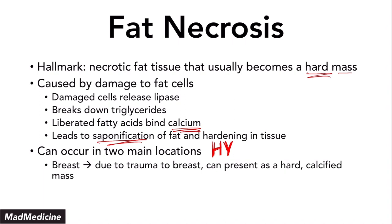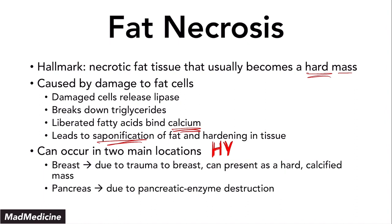The second location is the pancreas. The pancreas leads to pancreatic enzyme destruction of cells, and the pancreas has a lot of lipase. Pancreatic lipase will cause the same process to happen, and you are going to see saponification occurring in the pancreas as well.